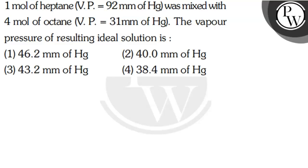Hello Bacho, let's read the question. The question says that 1 mol of heptane with vapor pressure 92 mm of Hg was mixed with 4 mol of octane with vapor pressure 31 mm Hg. The vapor pressure of the resulting ideal solution is — we have provided 4 options.